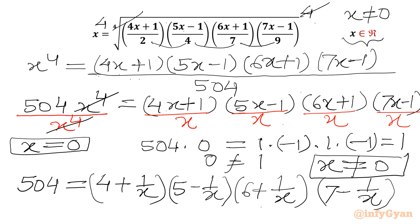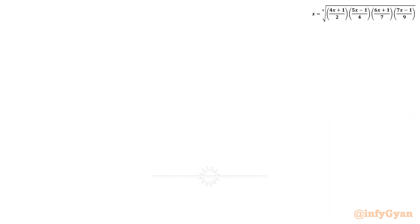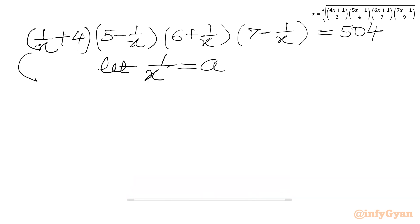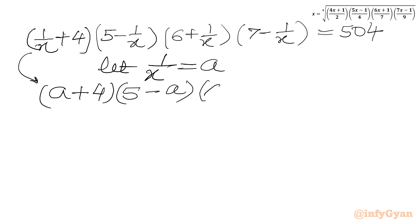Now we can use the substitution 1/x = a. Our equation becomes (a + 4)(5 - a)(6 + a)(7 - a) = 504.